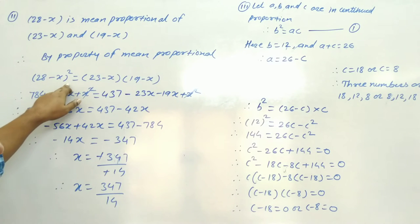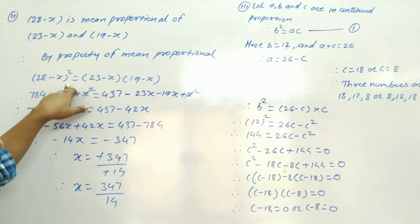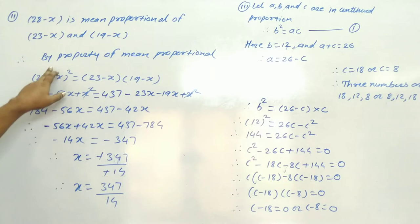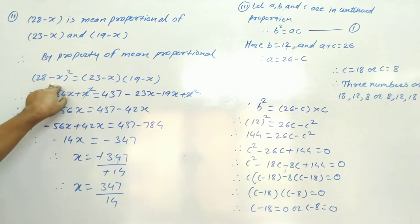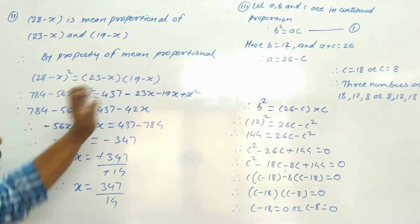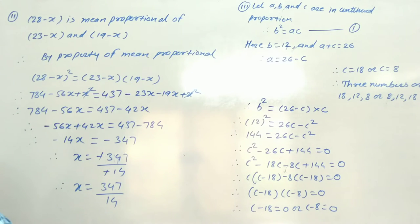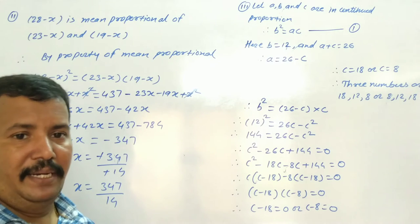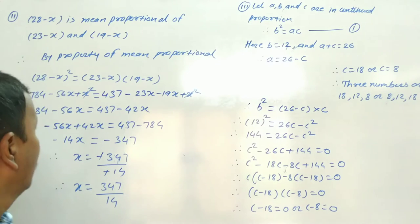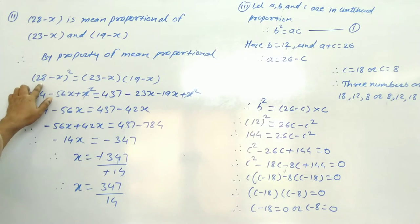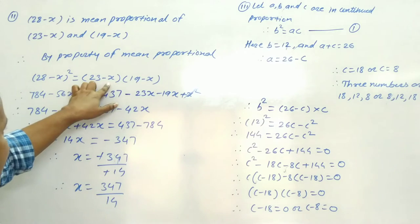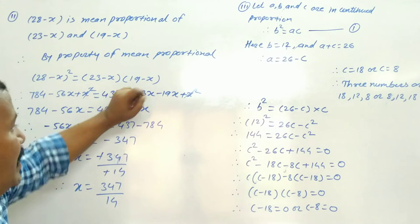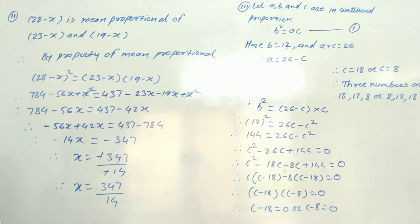By property of mean proportional, (28 minus x) squared equals (23 minus x) into (19 minus x), because the mean proportional squared equals the product of the extremes.